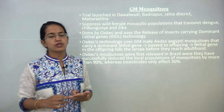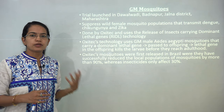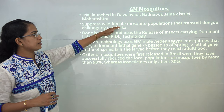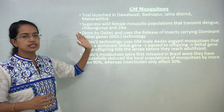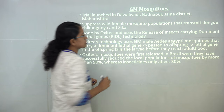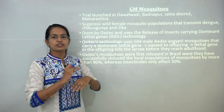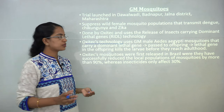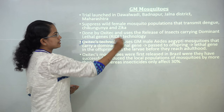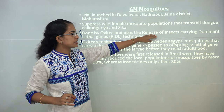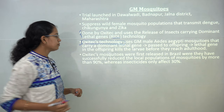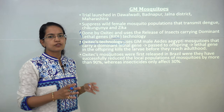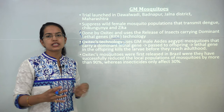A new approach to control dengue is the genetically modified (GM) mosquito. Male mosquitoes are genetically modified so that when they mate with female mosquitoes, they produce lethal genes transmitted to offspring via Oxitec technology. The offspring carrying this gene are killed at the larval stage and do not reach adulthood. The technology is called RIDL — Release of Insects carrying a Dominant Lethal gene. GM mosquitoes are approximately 90% effective, compared to only 30% for conventional insecticides.